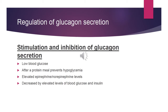Conversely, glucagon secretion is inhibited in the well-fed state, where insulin is elevated, blood glucose is normal, and glucagon secretion is therefore inhibited.